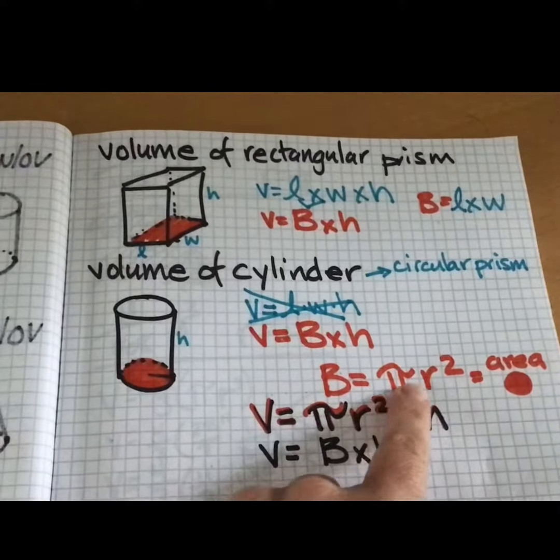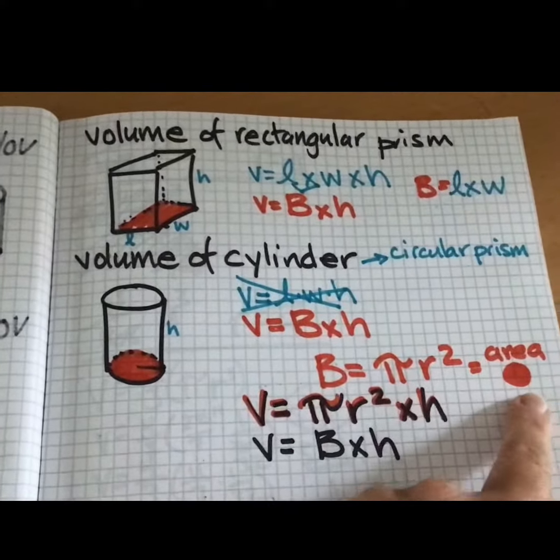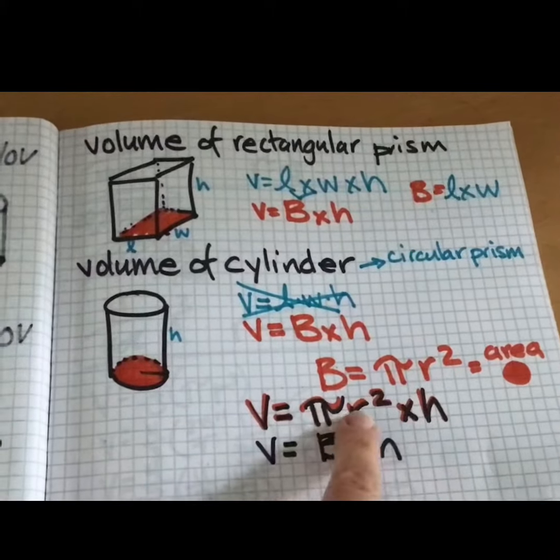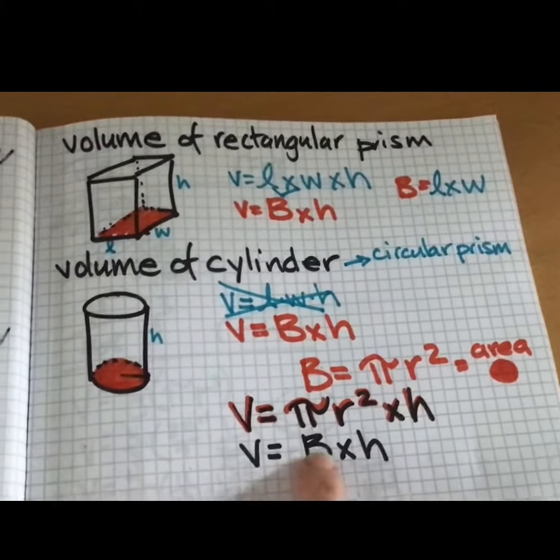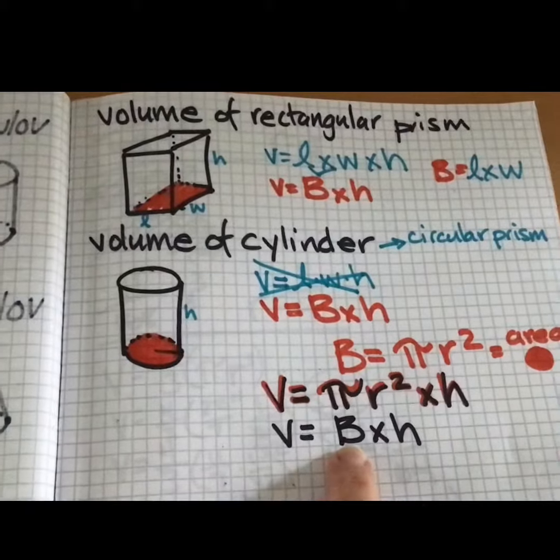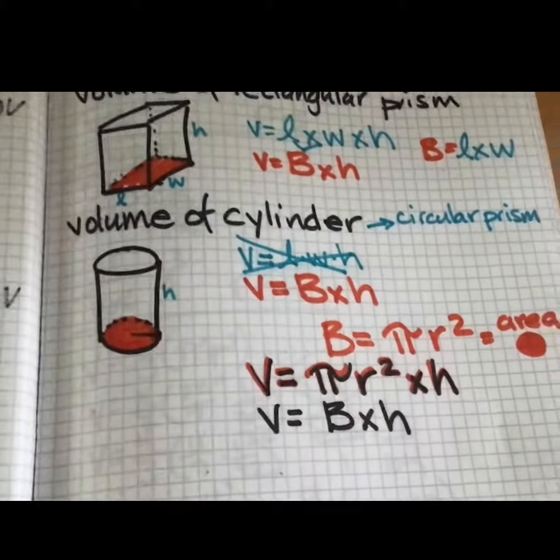We are doing the pi r squared, which is the area of our circle. Volume is pi r squared times height, area of the base. I'm using capital B because it's the area of the base times height.